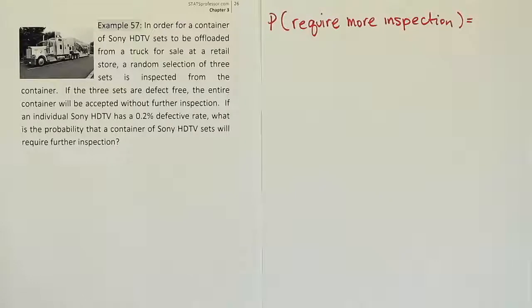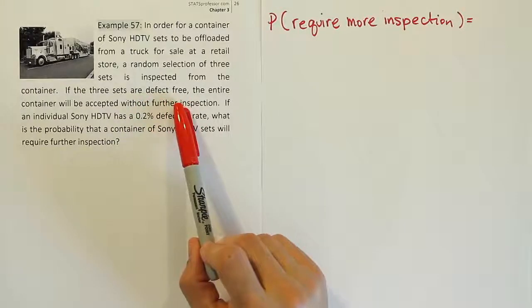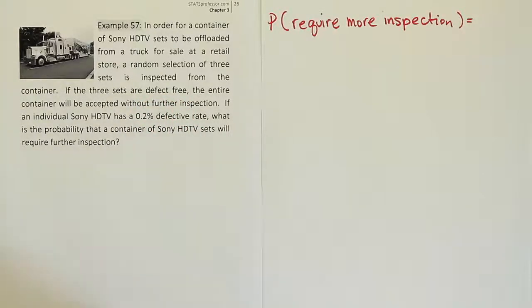What does it take to require more inspection? For example, the first set we looked at, if that was defective, would we require more inspection then? Well, the answer would be yes, right? Because anytime, if they're not all defect-free, we're going to have to inspect more sets. So if the first set is defective, that would cause further inspection.